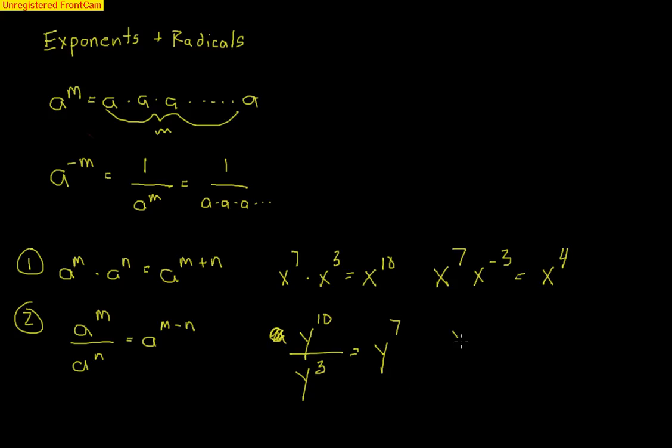Be careful, though, because if we did it like this, with the y to the 3 on top, y to the 10 on the bottom, again, you could just use the idea that 3 of these y's on the bottom are going to cancel, leaving 7 y's on the bottom. Or 3 minus 10 is y to the negative 7. And then we say, wait a minute, we don't like that negative exponent. So we'd put 1 over y to the 7th as our final answer.